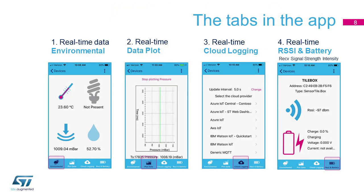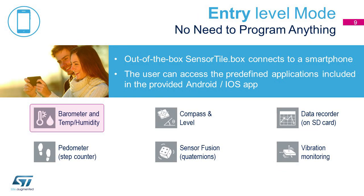The app screen has some buttons at the bottom of the screen. These buttons can be used to access different screens. The first two have already been shown. The next one, cloud logging, will be explained in the next video. And the last one shows some useful information about the signal strength of the Bluetooth connection, RSSI, and the status of the SensorTile.Box battery. So we've just checked out the barometer example.